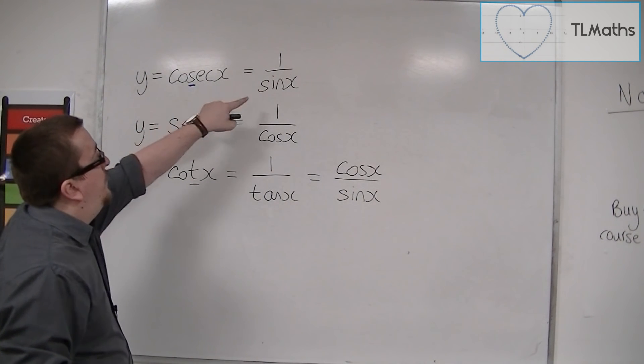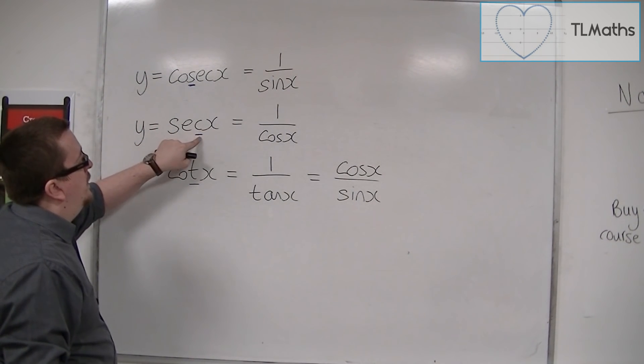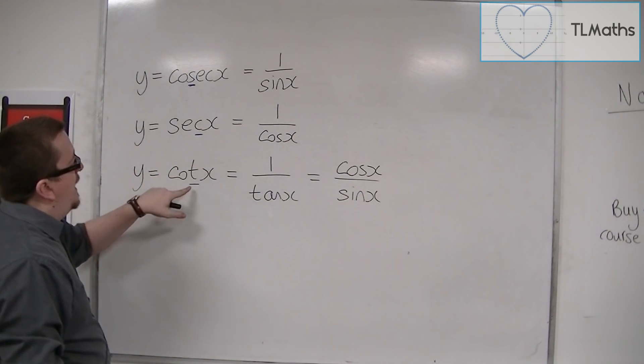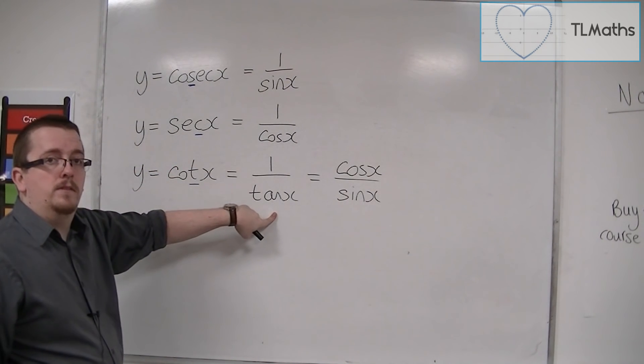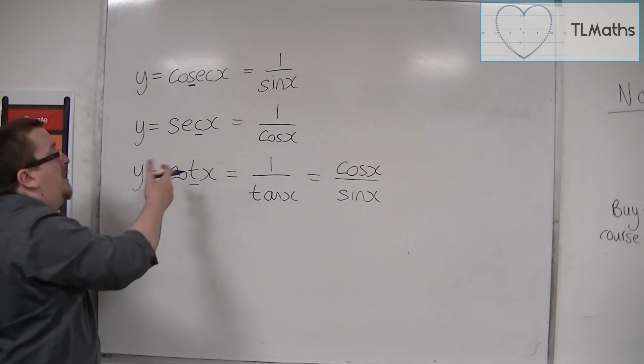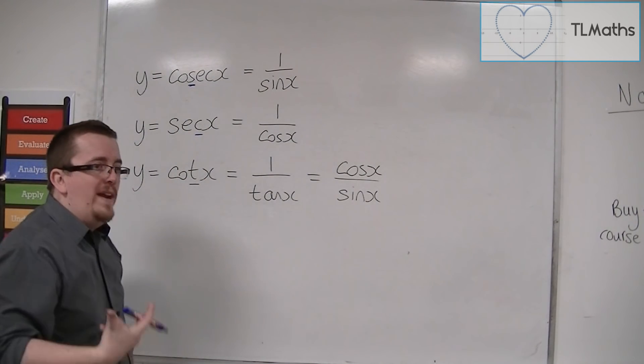Cosec, s is sine, sec, c is cosine, and cot, t for tan. Okay, so use the third letter rule to remember which is which.